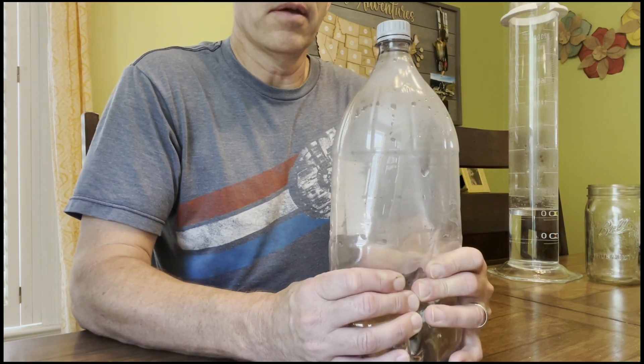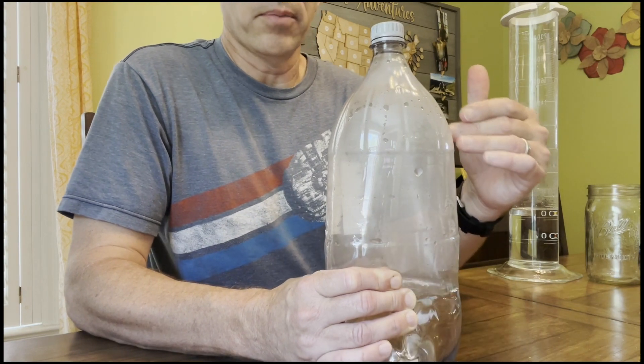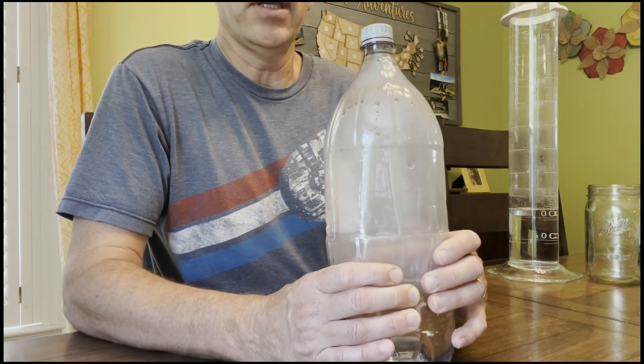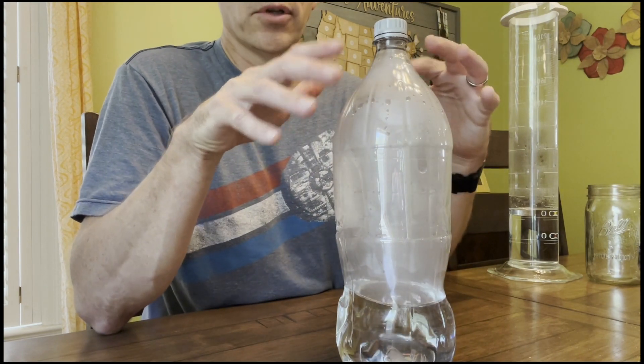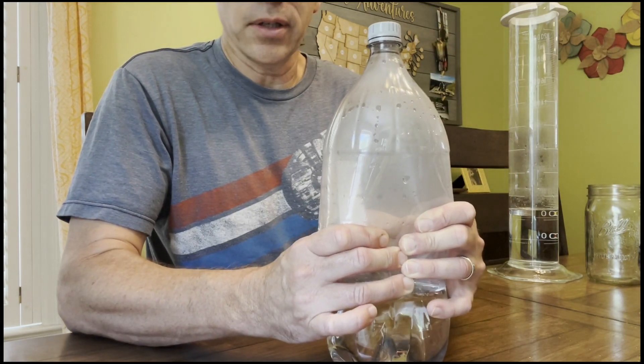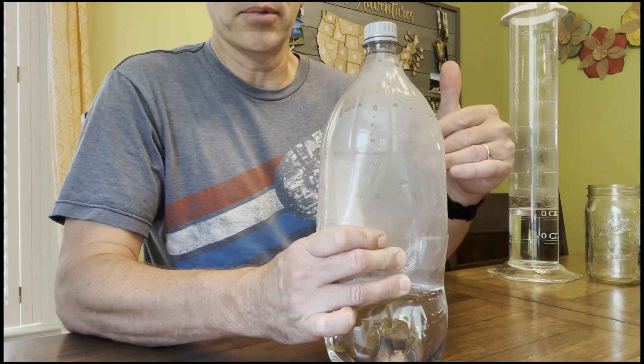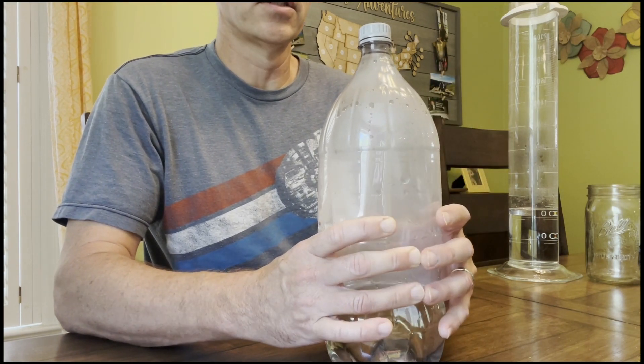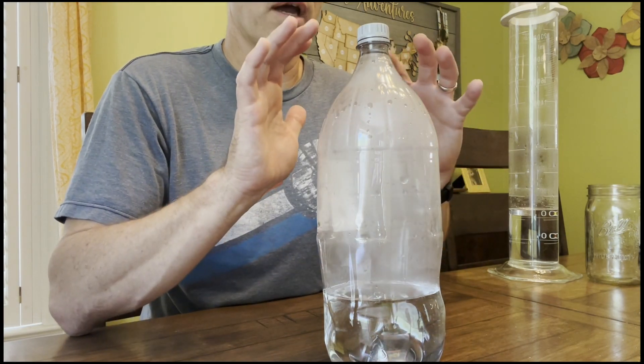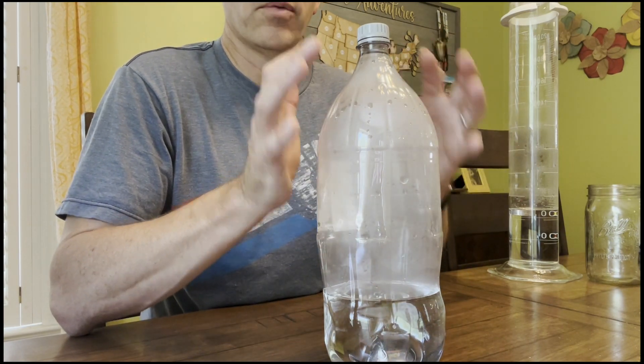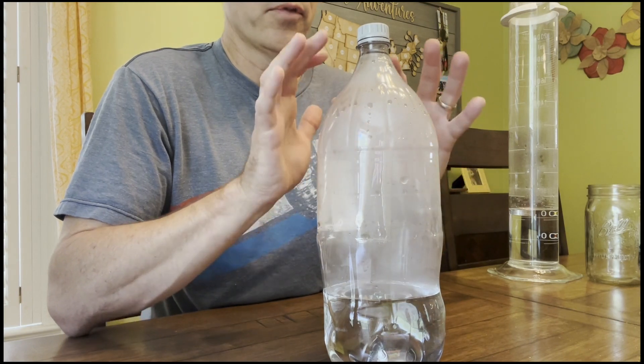When I squeeze the bottle, we're increasing the pressure inside the bottle. When I release, the pressure drops and the clouds form. That's because pressure and temperature are connected. When I squeeze, I actually increase the temperature and the pressure goes up. When I release, the pressure drops and the temperature also drops, and then the air can hold less water and we get clouds forming.